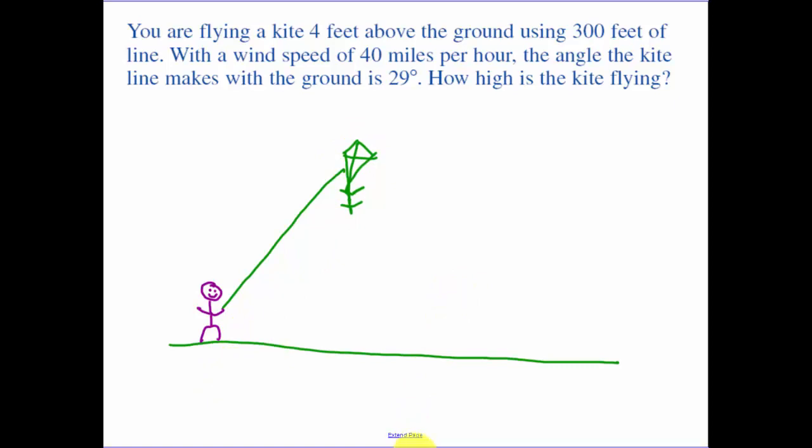We have in our picture 300 feet of line. So this right here is our 300 feet of line. The angle that this, if I were to extend this forever, the angle that it makes with the ground down here is 29. If you draw a little line parallel to our ground, that's also 29 because those are corresponding angles.